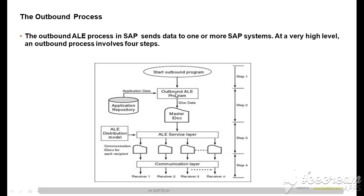After the data comes into the internal table, it goes into the IDoc. First, a master IDoc is created. The master IDoc has more records and fields compared to what is required by the receiving system — it may also contain raw data that can be customized per the receiving system's requirements. The master IDoc is then passed to the ALE service layer where a communication IDoc is created. So the four steps are: triggering, creation of the master IDoc, creation of the communication IDoc, and sending the communication IDoc to the receiving system.